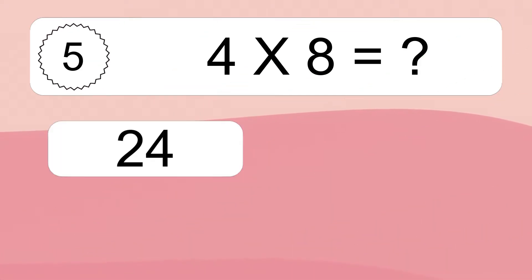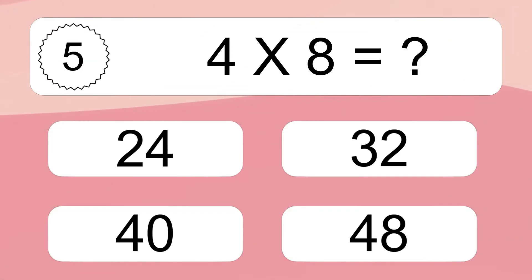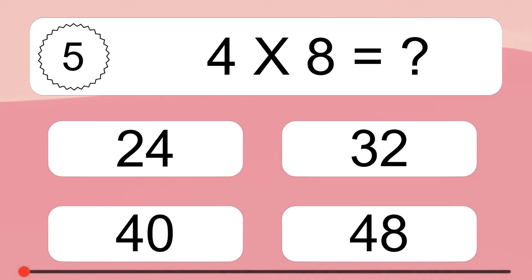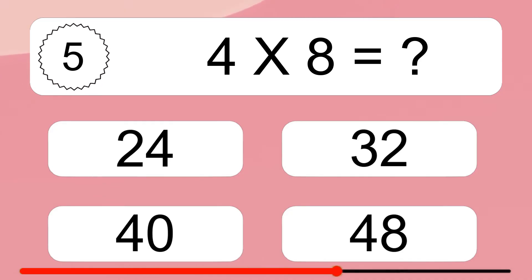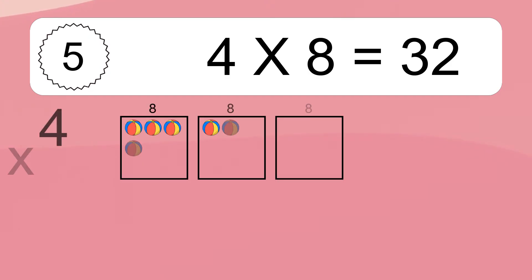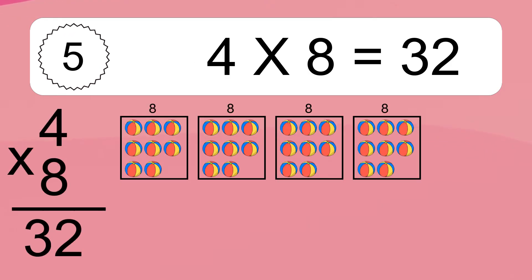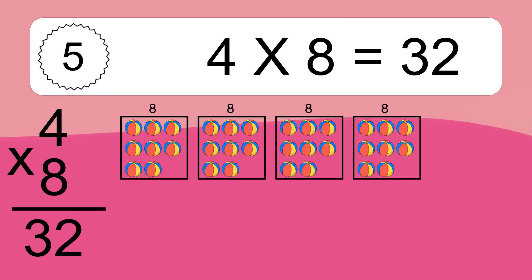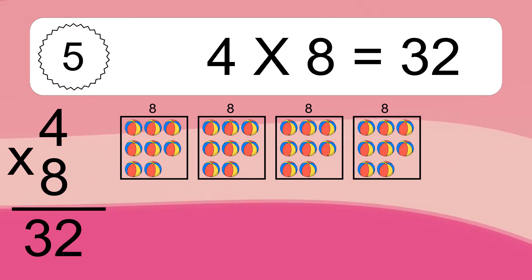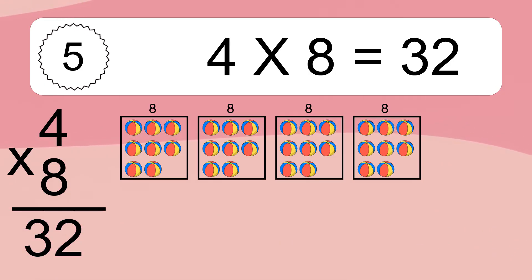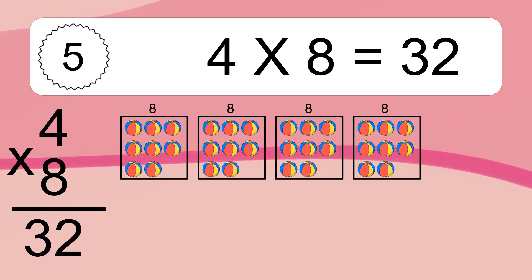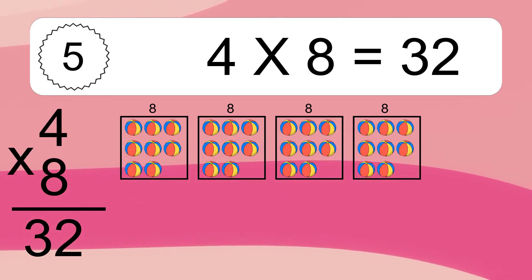4 times 8 equals what? 4 times 8 equals 32. We have 4 boxes, and each box has 8 colorful balls inside. If you count all the balls in all the boxes together, you will have 4 times 8 balls. This equals 32 balls.